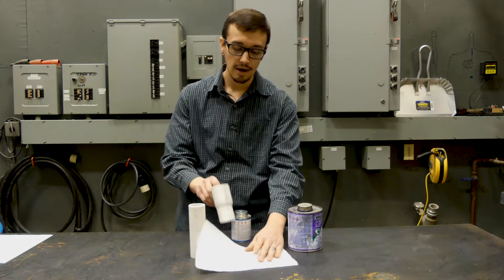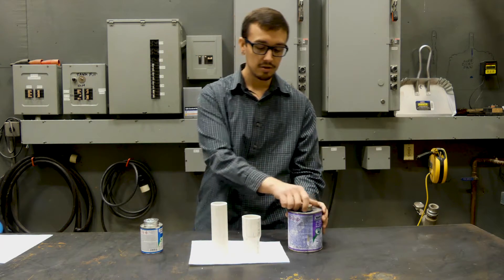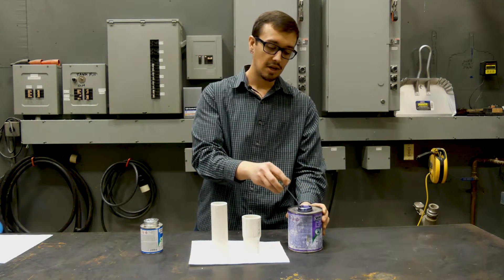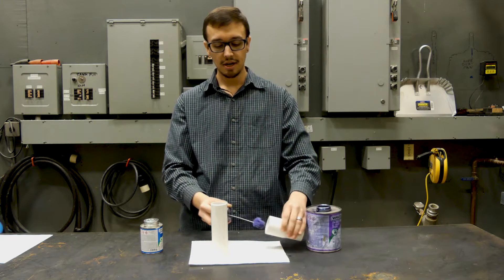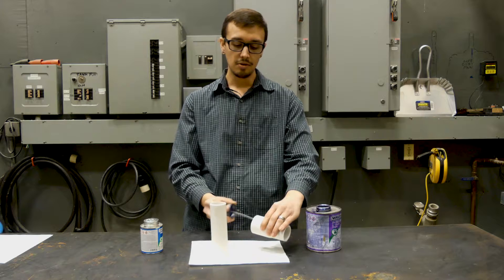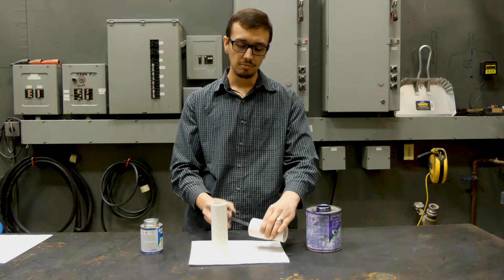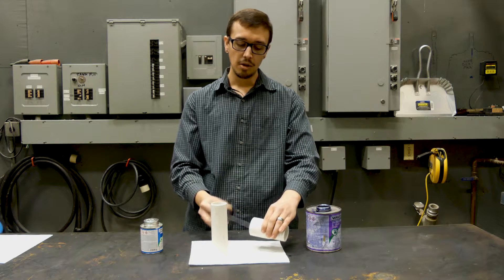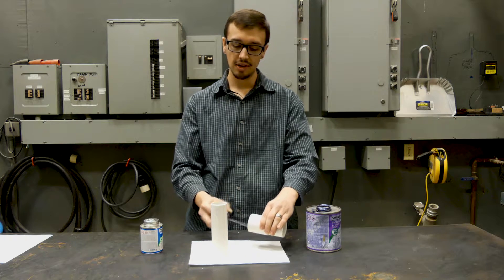So when it comes to applying your primer and your glue, I like to keep a nice clean work area. So I use a paper towel here to just keep things cleaned up. And with the primer, it's actually really important that you clean your surfaces. If you're out in the field, mud or dirt or anything like that, you wipe it down with a paper towel. I've gone ahead and pre-wiped down both of these fittings.